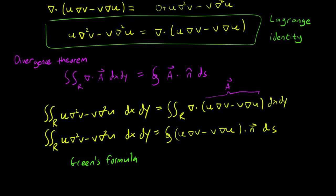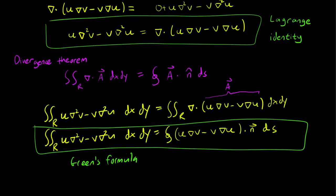So this is the Green's formula. And the point of this is that we are able to tell when the Laplacian is self-adjoint. So remember, it's self-adjoint when the left-hand side is zero.